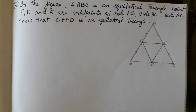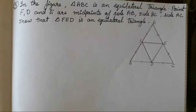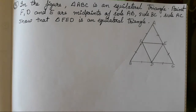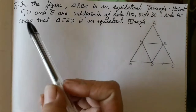Hello everyone, today we are going to do class 9th maths part 2 chapter number 5 quadrilaterals practice set number 5.5, question number 3 and 4. The other questions, that is question 1 and 2, we did yesterday. So let's start with question number 3 today.